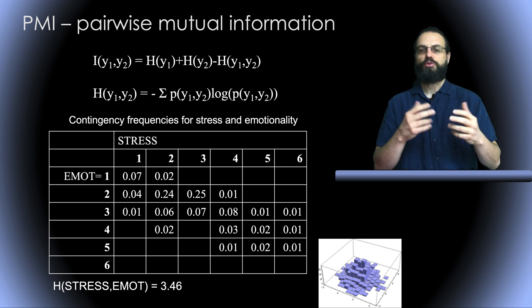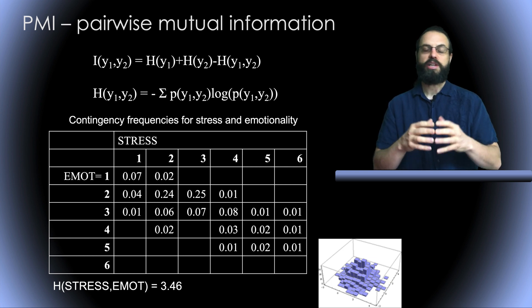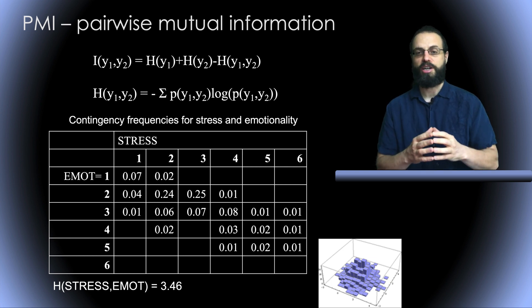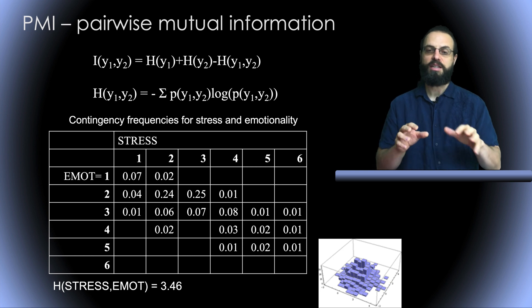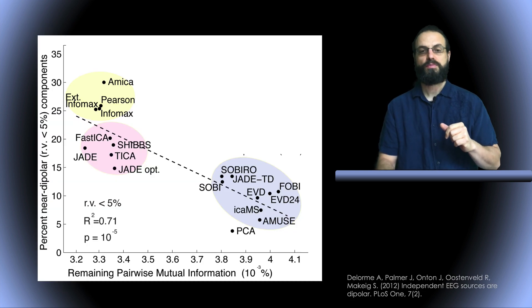When we get to three variables, four variables, calculating the joint entropy becomes impossible. Here we have 72 ICA decompositions. The mutual information reduction before took care of that, but this is an interesting, relatively independent measure.